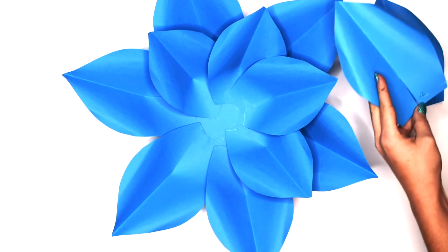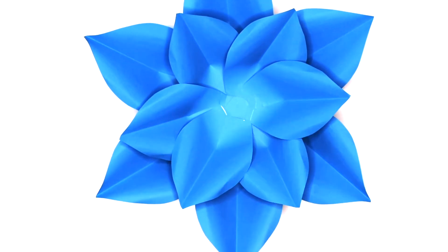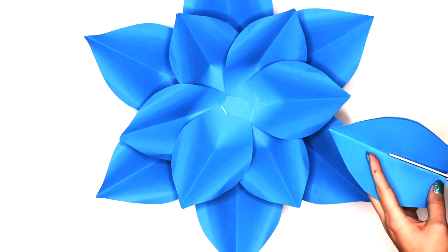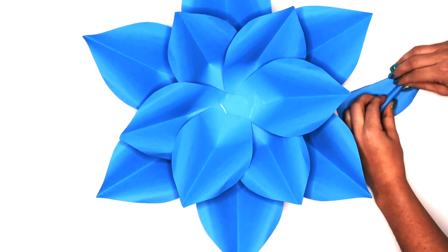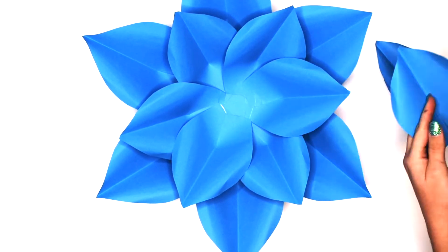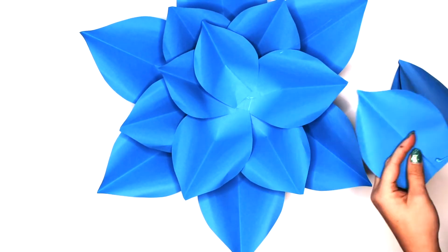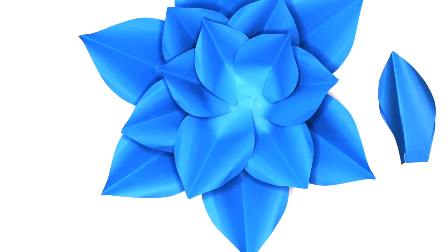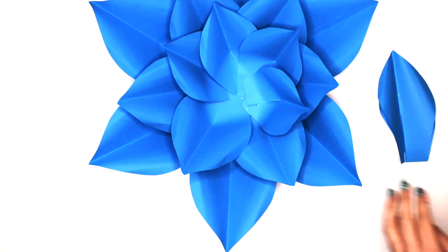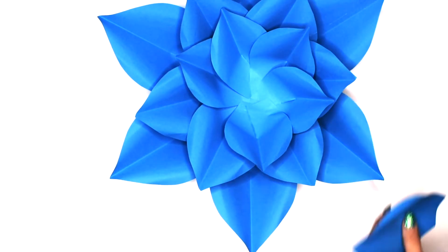We are finally at the inner layer. For this flower we chose to only do three layers, however it's your choice. There are four sizes within our template. You could do a fourth layer and make your flower even more full. But now we're just going to repeat the steps we've already done with the other two layers to complete our flower.